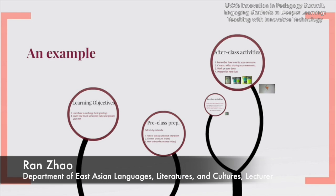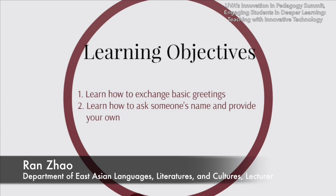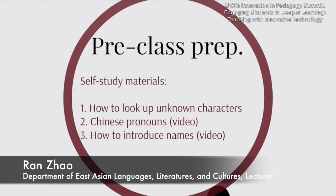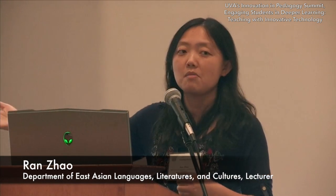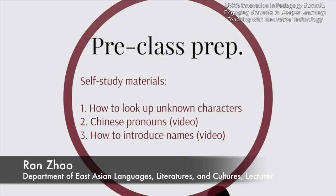The learning objectives are: students need to learn how to exchange basic greetings, and how to ask someone's name and provide their own. For pre-class preparation, they self-study materials including videos I created over the summer — there are about 60 of them. First, they need to know how to look up unknown characters. Then they watch a video about Chinese pronouns — asking 'what's your name,' 'my name is,' 'his name is.' And there's a video on how to introduce names, like family name and given name.